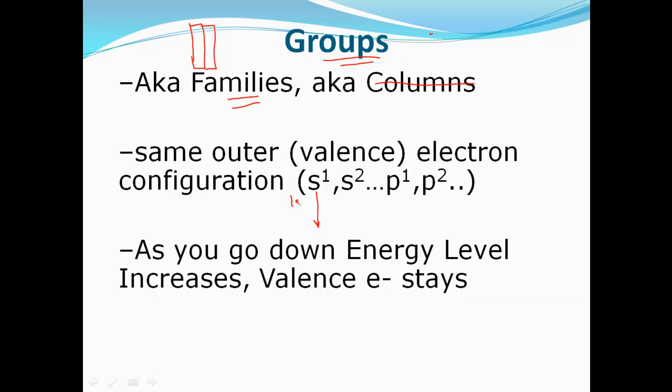No longer in class will I be using the word columns anymore. We're going to refer to these verticals as groups or families. Now, the one thing they have in common, every single group has the exact same valence electron configuration. That means everything in column 1 is an S1, top to bottom. Everything in group number 2 is going to have an S2 in its outer shell. All that's happening as we go down the periodic table is that we're increasing our valence energy level. But the electron configuration stays the same.